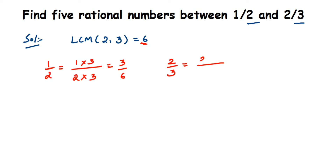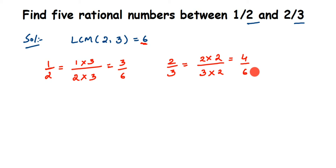Similarly for the second number, 2/3, we multiply both numerator and denominator by 2 to get 4/6. Now we need to find rational numbers between 3/6 and 4/6, which are equivalent to 1/2 and 2/3 respectively.